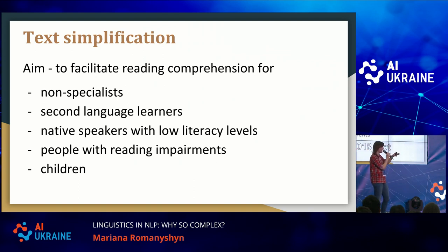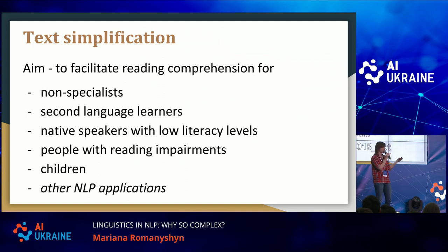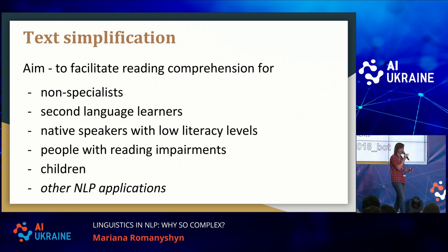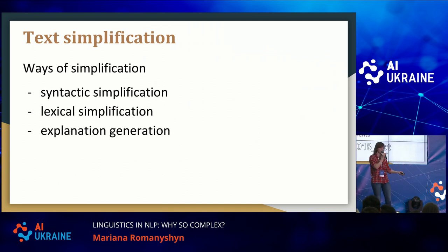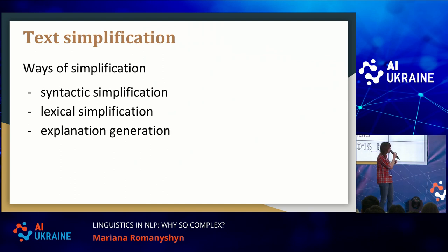The aim of text simplification as a huge area of NLP is to facilitate reading comprehension for non-specialists, for second language learners, for children, for people with some disabilities, and so on — or even for other NLP applications. Say if you're doing text summarization, it's much easier to summarize text that is simple. It's much more complicated to summarize complex text. So text simplification can help with that.